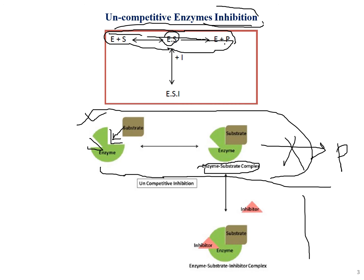What happens is: after the enzyme-substrate complex is formed, the inhibitor then combines with it, because the enzyme has another free slot available. This second slot is occupied by the inhibitor after formation of the enzyme-substrate complex, forming a trio — the enzyme-substrate-inhibitor complex. So the inhibitor does not compete; it acts step by step after the enzyme-substrate complex has formed.